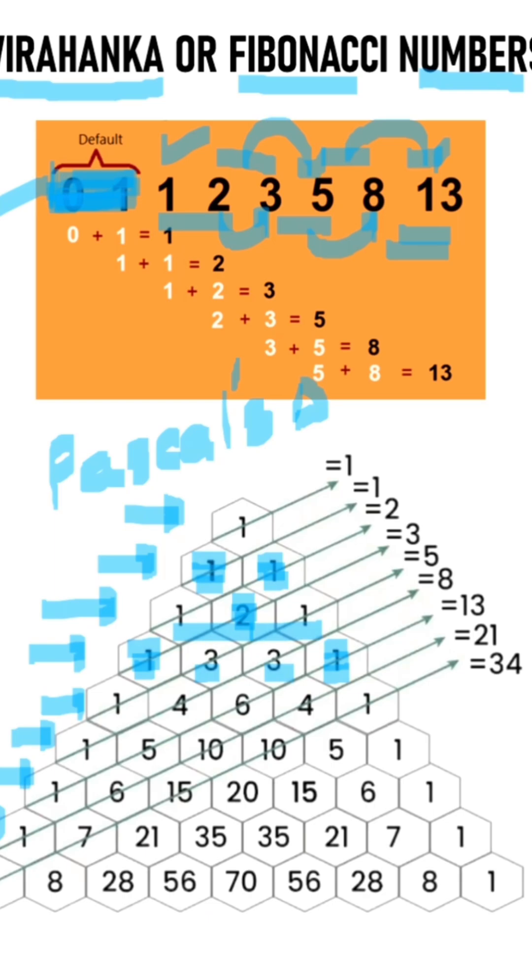Now you can see these numbers which we have written diagonally here are obtained by the diagonals of Pascal's triangle. Along this diagonal you have only 1. In the second diagonal you have only 1 again. In the third diagonal you have 1 plus 1 which gives you 2. Then in the next diagonal we have the sum as 3, and all these numbers which we are obtaining along the diagonals are actually the Fibonacci numbers obtained from Pascal's triangle. Isn't that an amazing concept?